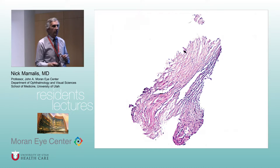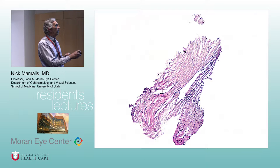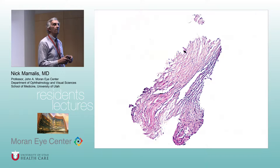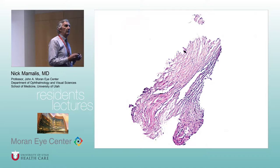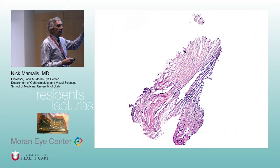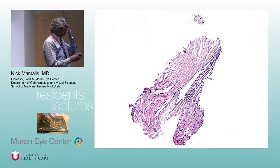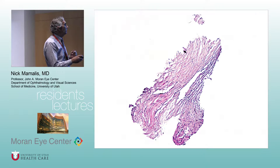When you're looking in with the gonioscope, the first thing that denotes the anterior-most point of the trabecular meshwork is Schwalbe's line. Schwalbe's line is where Descemet's membrane ends and the trabecular meshwork begins. So if you're looking with your goniolens mirror, that denotes the anterior-most edge of the trabecular meshwork.